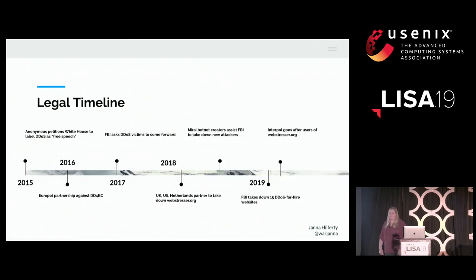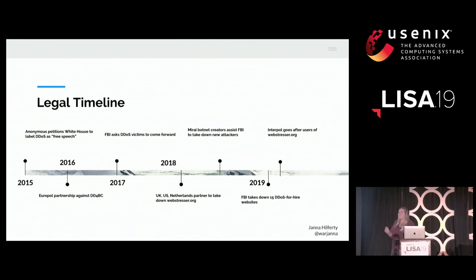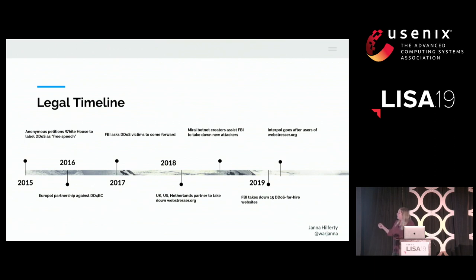In 2015, the hacktivist group Anonymous petitioned to make DDoS legal, arguing it was free speech — like a sit-in, but online. The White House didn't go for that, so it's still definitely illegal. In 2016, a partnership between several European countries with Europol — called Operation Pleiades — took down DD4BC, or DDoS for Bitcoin, helping shut down that DDoS-for-hire service. In 2017, the FBI began explicitly asking people who had been DDoSed to come forward and give details of the attack, helping take down attackers sending multiple DDoS attacks across multiple vectors. That call for victims to come forward is still open.